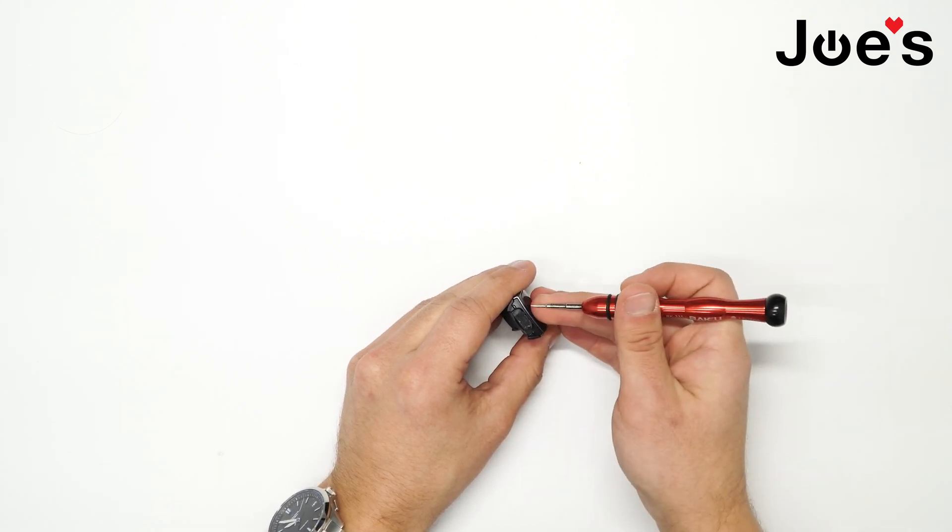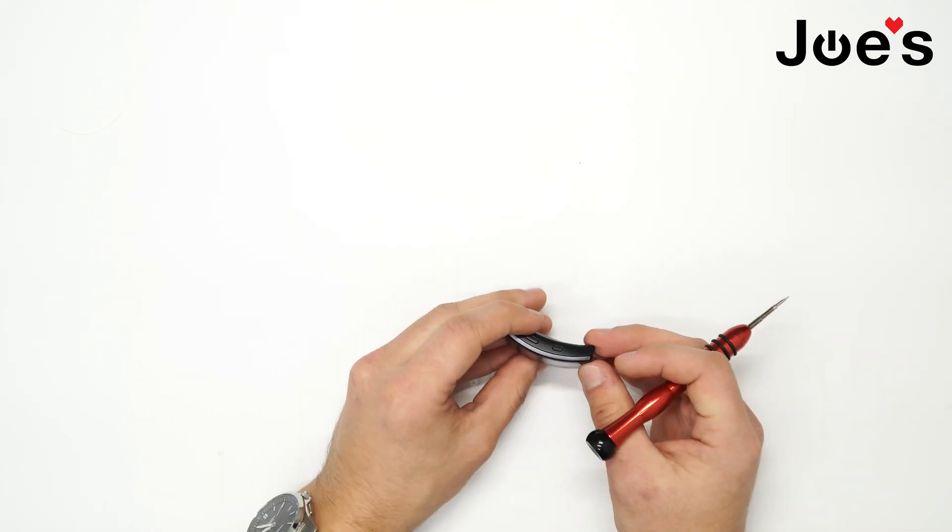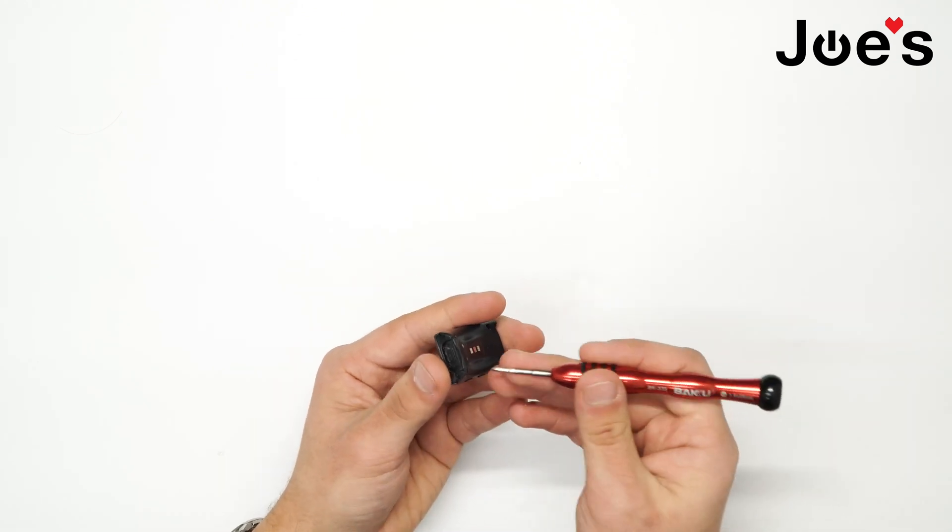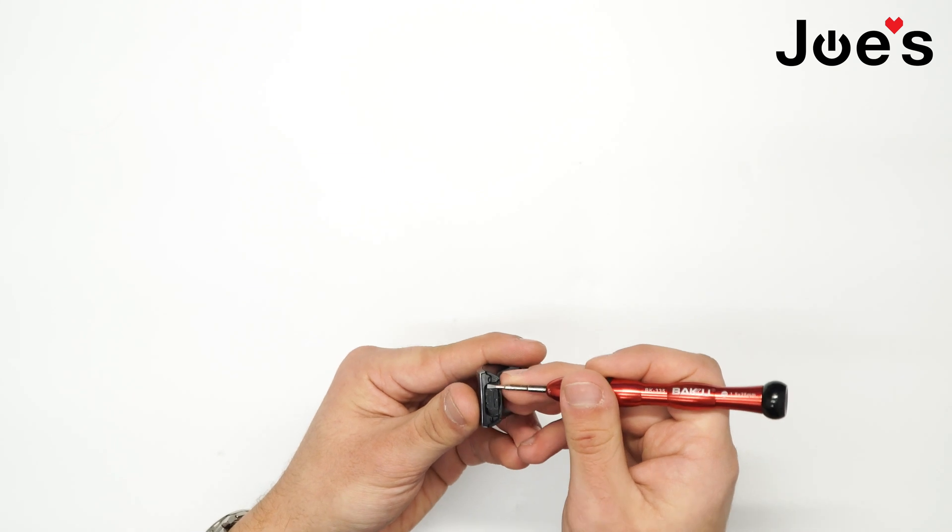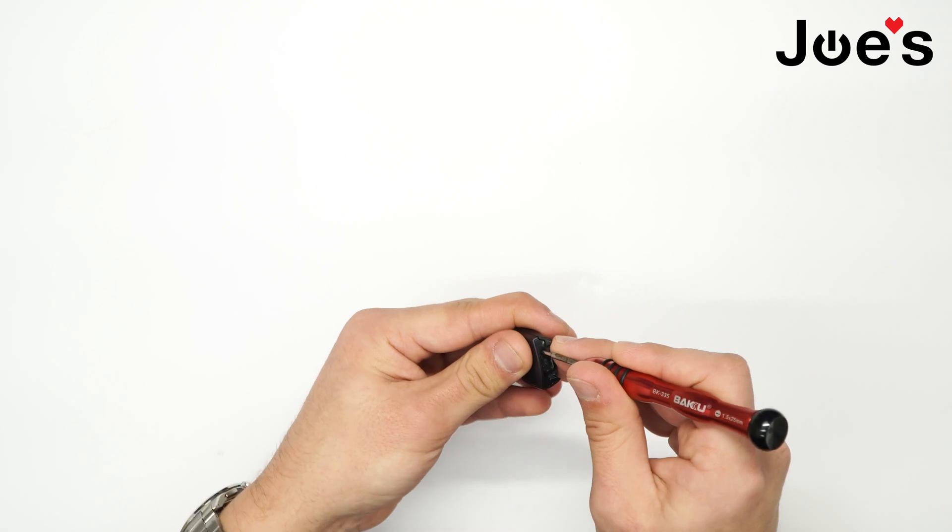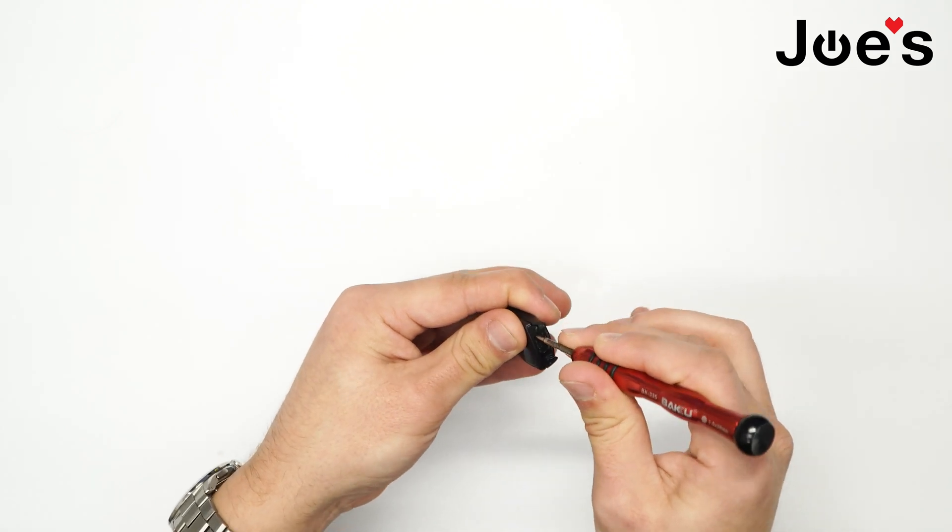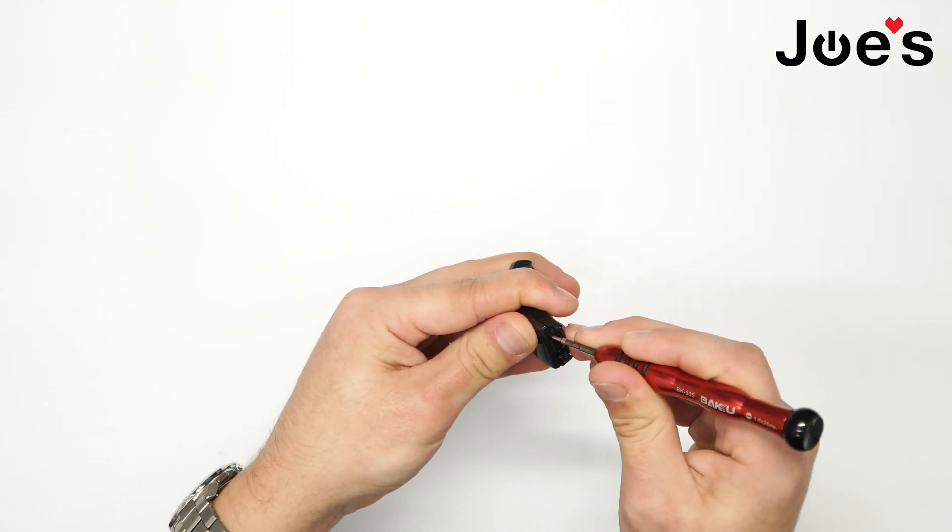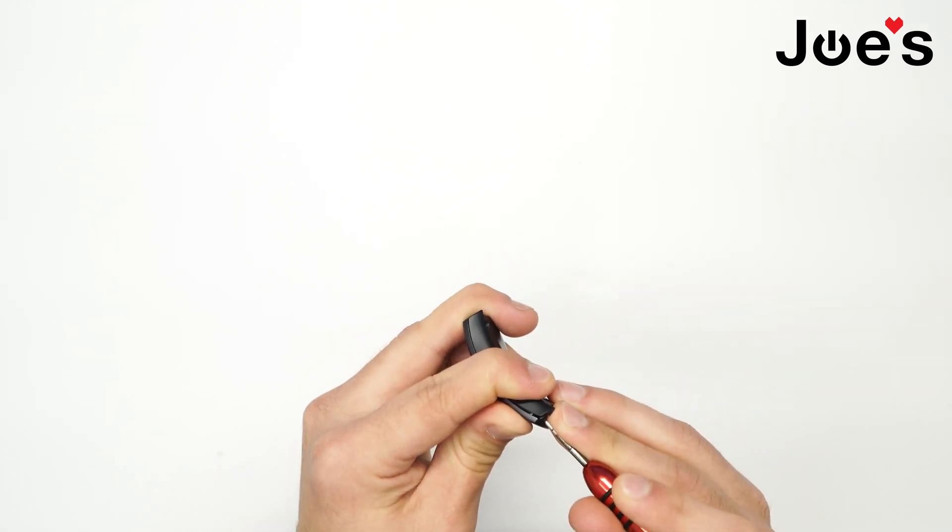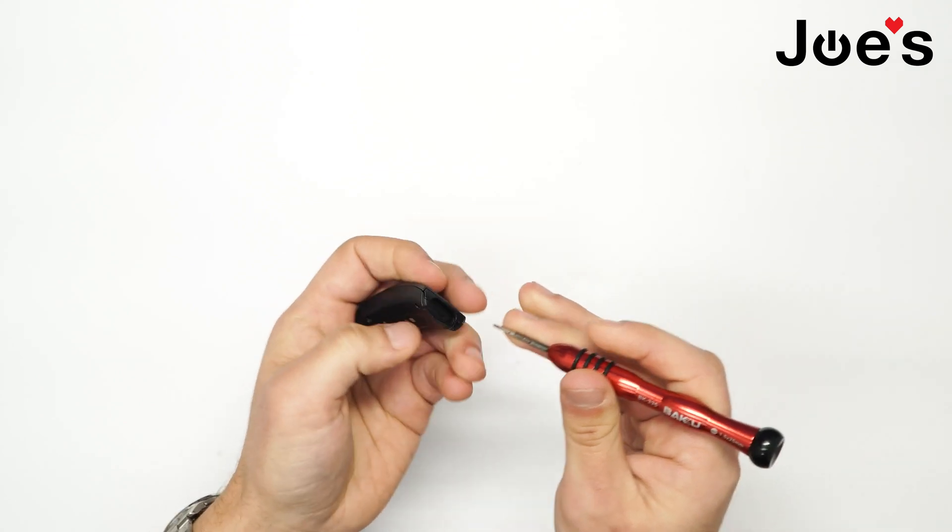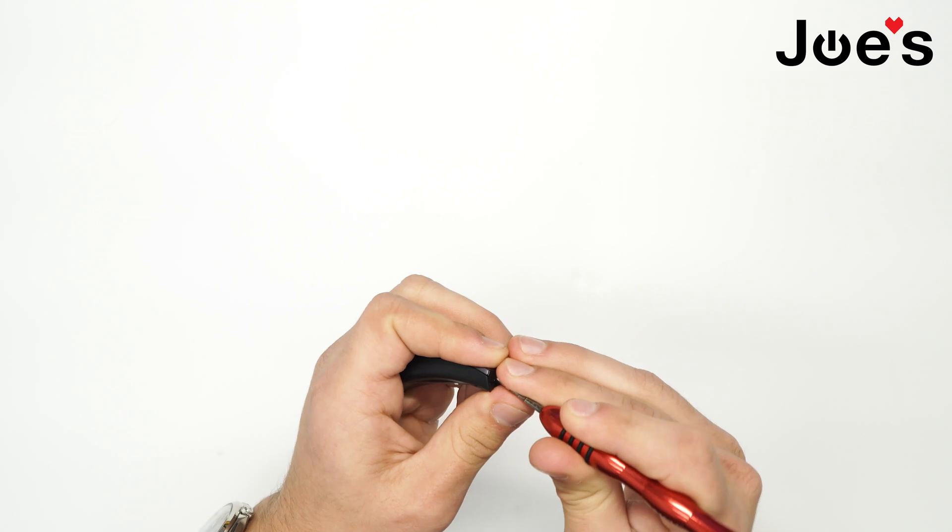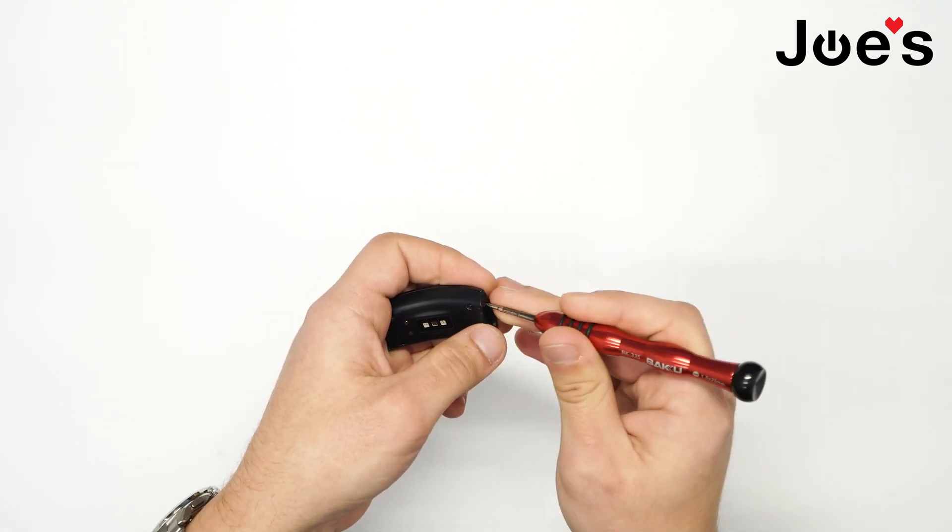We want to start on the opposite side of the buttons. Take your flathead and as you travel between the housing and the screen, you'll feel where those two meet. What you want to do is kind of pry there a little bit on both sides.